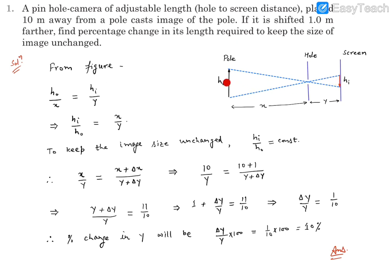You'll find that h naught by x, this perpendicular distance for this, must be equal to h_i by y. So we are writing h naught by x equals h_i by y. From here we are able to find this height of image divided by height of object must be equal to y by x.